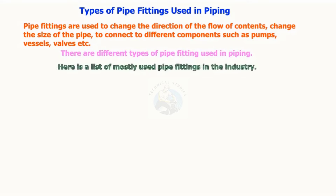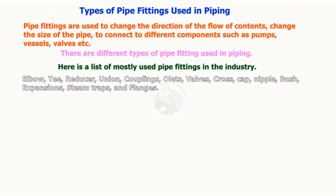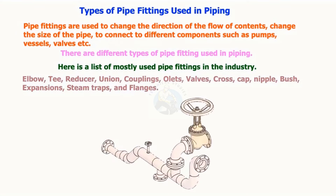Here is a list of mostly used pipe fittings in the industry: elbow, T, reducer, union, couplings, olets, valves, cross, cap, nipple, bush, expansions, steam traps, and flanges.